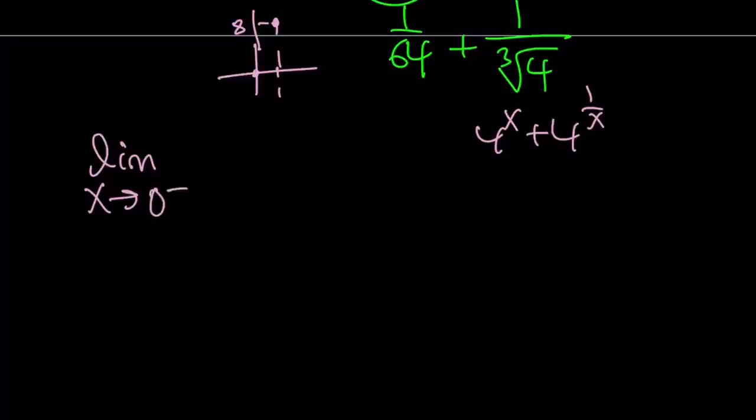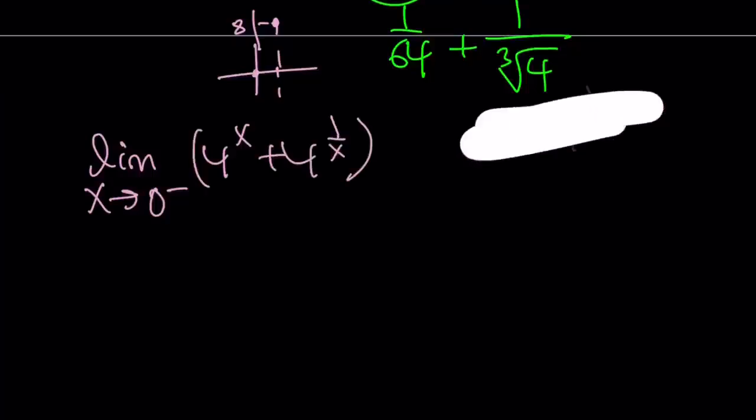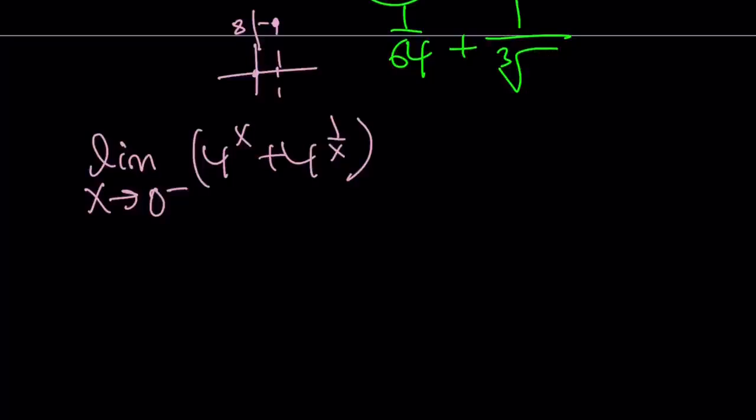So what happens if you find the limit as x approaches 0 from the left of 4 to the x plus 4 to the power 1 over x? How do you find this limit? Now think about it. So x is very, very small, and you have something like 4 to the power 0. That is 1, for sure. It doesn't matter from the right or from the left. 4 to the power 0 is 1. But as x approaches 0 from the left, you're dealing with 1 over 0, which approaches infinity. But since you're approaching 0 from the left, it's going to approach negative infinity. So you have something like 4 to the power negative infinity. I know some people who are very rigorous are not going to like that notation. But anyways, this just means 1 over 4 to the power infinity, which is like 1 over infinity, and that is like 0.